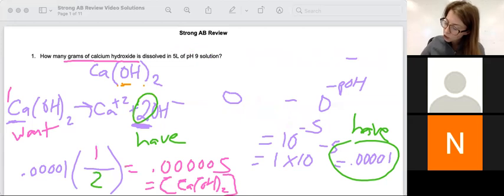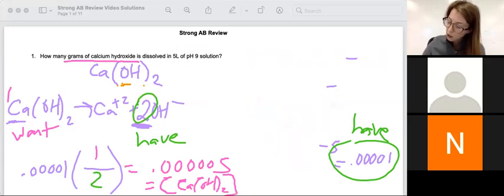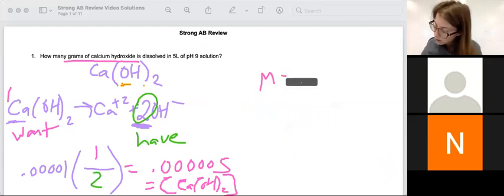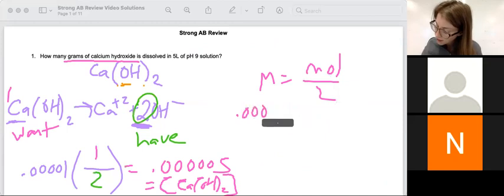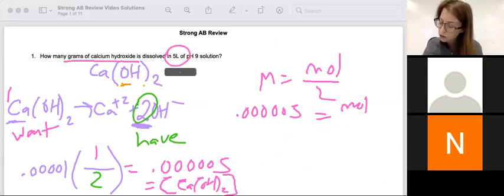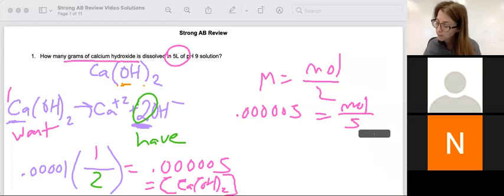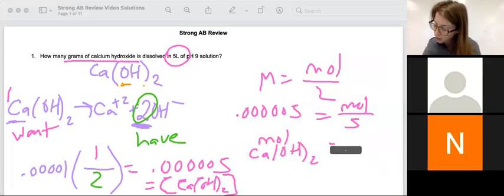What that represents is the molarity of my calcium hydroxide. Molarity of the calcium hydroxide is going to help me. I can plug into molarity equals moles over liters. Molarity of my calcium hydroxide, 3, 4, 5 zeros. And I also know my liters. So I end up multiplying by 5, and that's going to get me my moles of my calcium hydroxide.